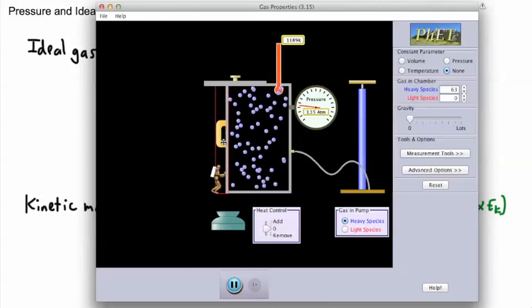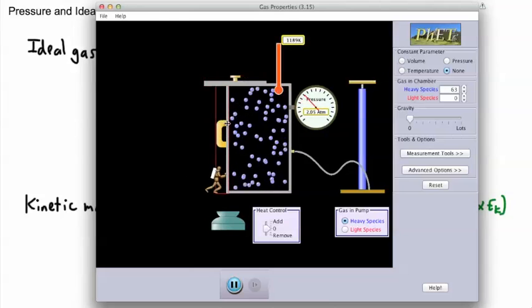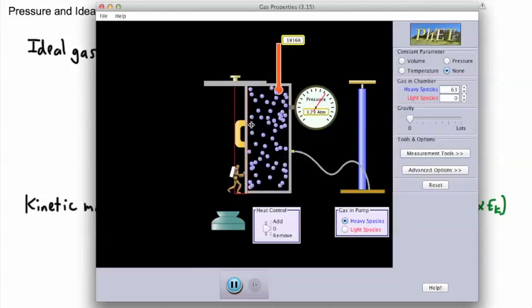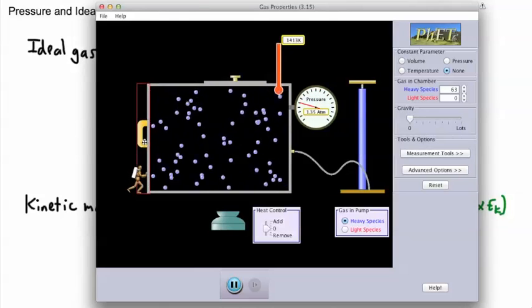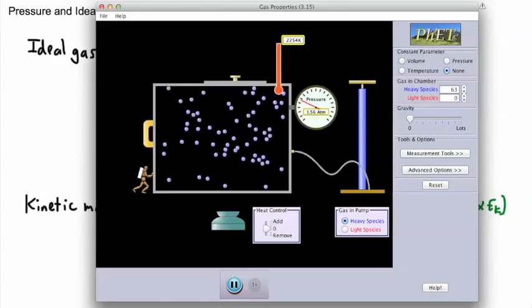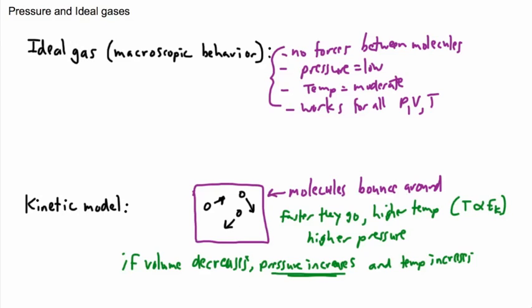If you decrease the volume too much, the top blows off! You can do all sorts of things with the sizes. This illustrates what we mean by the kinetic model — just billiard balls bouncing off each other. We can see qualitatively what happens by decreasing or increasing the volume, or changing the speed, and observe the effects on temperature and pressure.